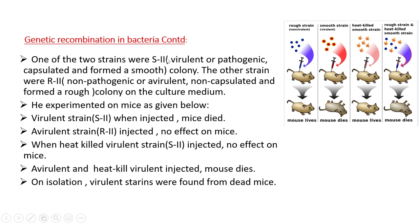The other strain was R2, or rough — avirulent, non-pathogenic, lacking the capsule. He experimented with mice: when he injected the virulent S2 strain, the mice died. When he injected the avirulent R2 rough strain, the mice survived. When he injected heat-killed S2 strain alone, the mice also survived.